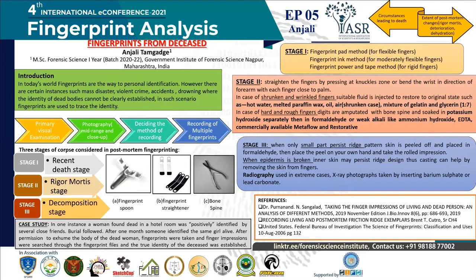Stage 1 is the recent death stage, where death has occurred recently — within a few hours, roughly 1 to 7 hours. In this stage, fingerprint recording is mostly similar to that of the living. We may use the fingerprint pad method, where a single digit pad is advised over the conventional bigger one, and the pad is rolled over the fingers. For moderately flexible fingers moving towards rigor mortis, we can use the ink method, where a horizontal roller is used to ink the finger, and with the help of a fingerprint spatula embedded with a fingerprint card or paper, we can record.